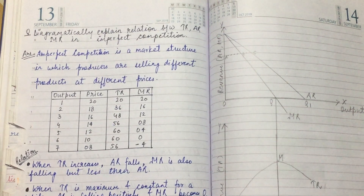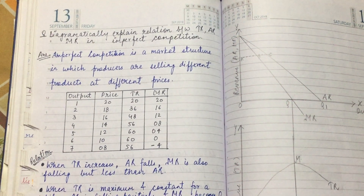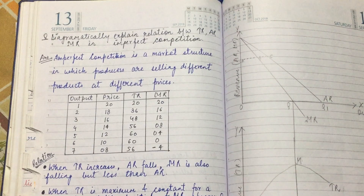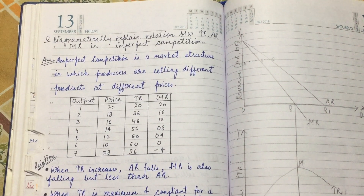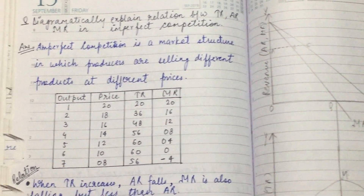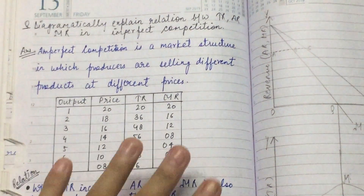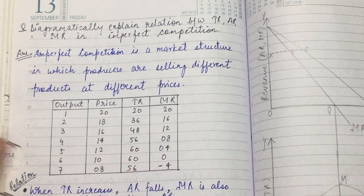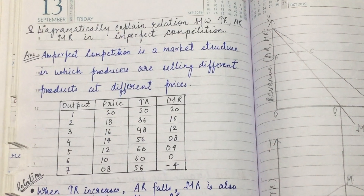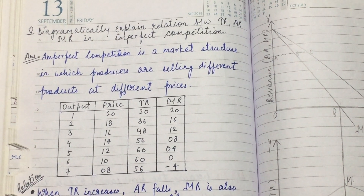First of all, if you examine the question — this is an important question from the perspective of your exam, so you can't skip this question. The question is: graphically explain the relation between TR, AR and MR in imperfect competition. The diagram explains the relation between these three things.